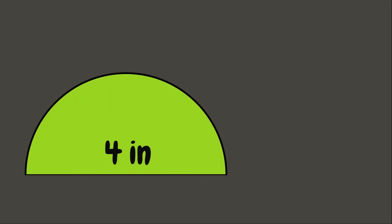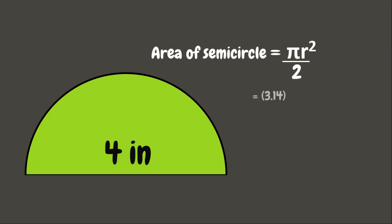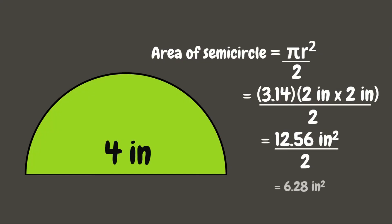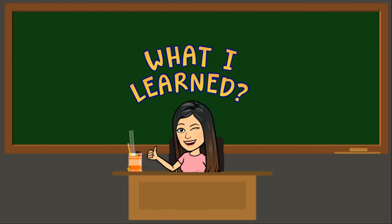For our last example, we have a semicircle. A semicircle is half of a circle. To get the area of a semicircle, we divide π r² by two. The value of pi is 3.14 and the radius is half of the diameter of four inches, which is two inches. So: two inches times two inches gives four square inches, then 3.14 times four equals 12.56 square inches, divided by two equals 6.28 square inches — that is the area of this semicircle.